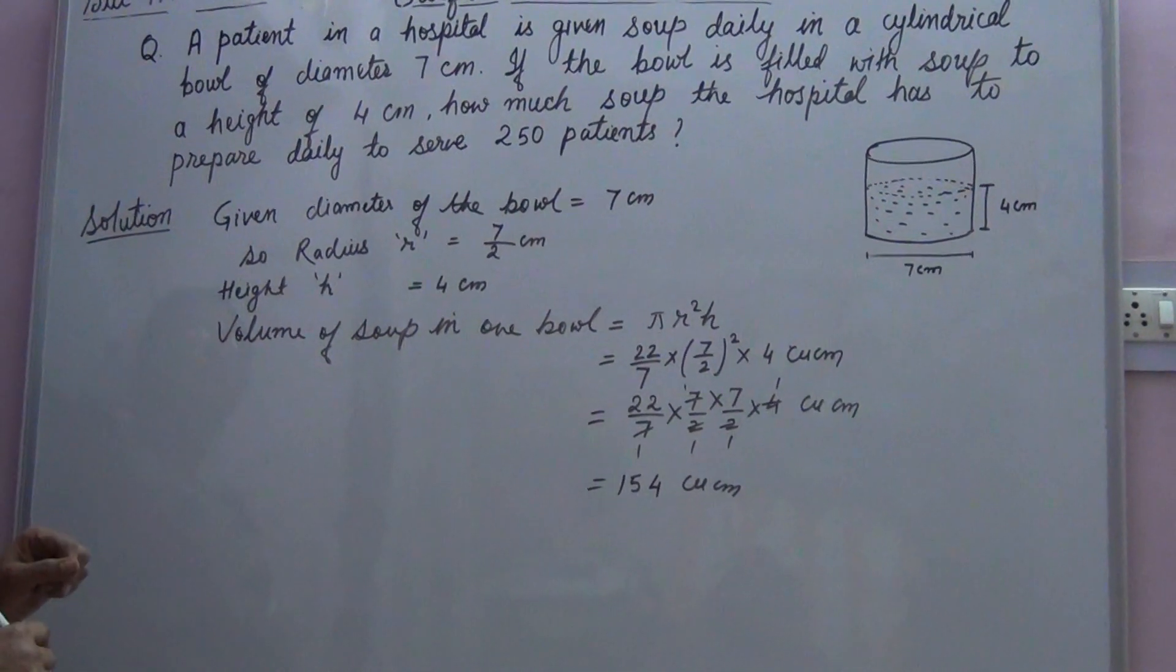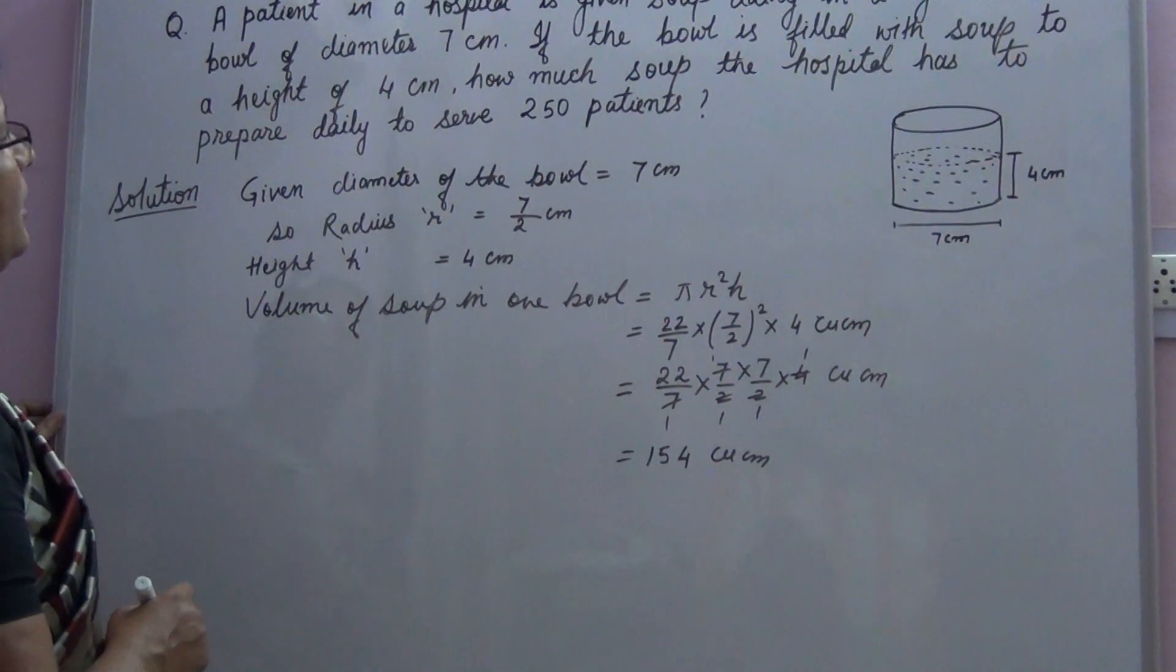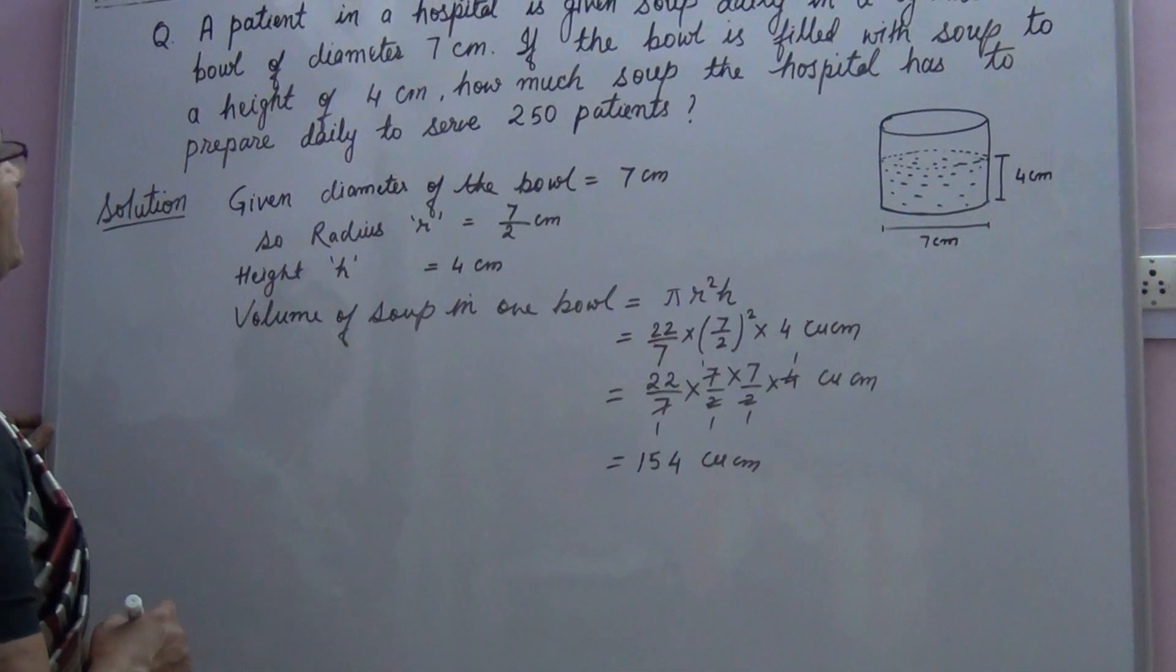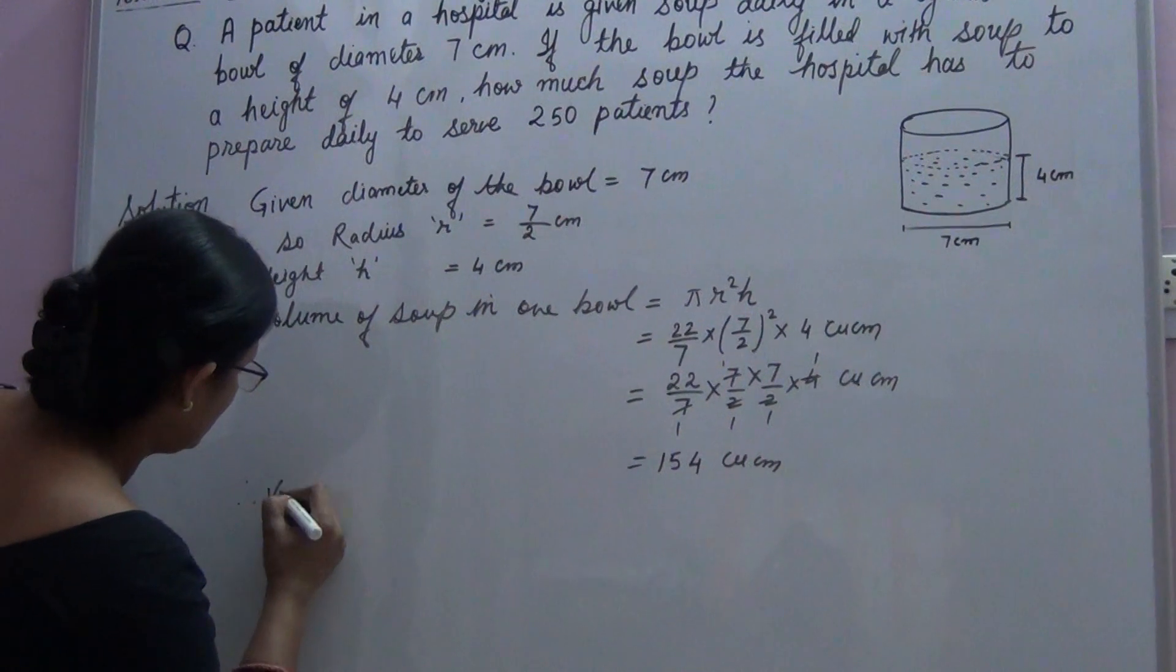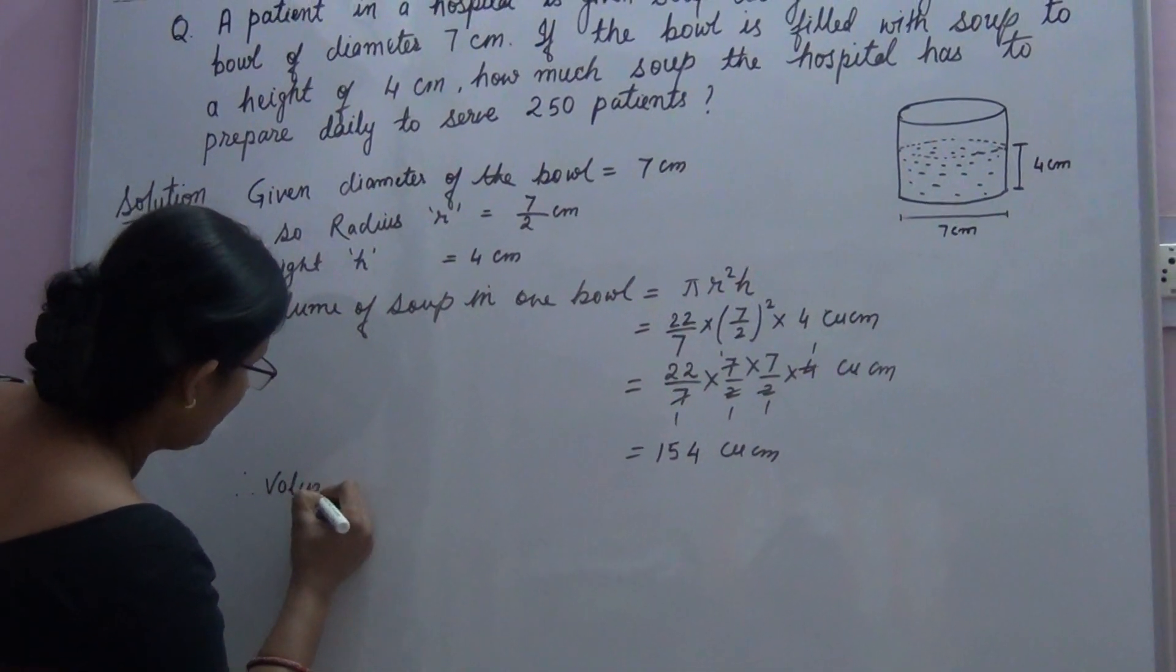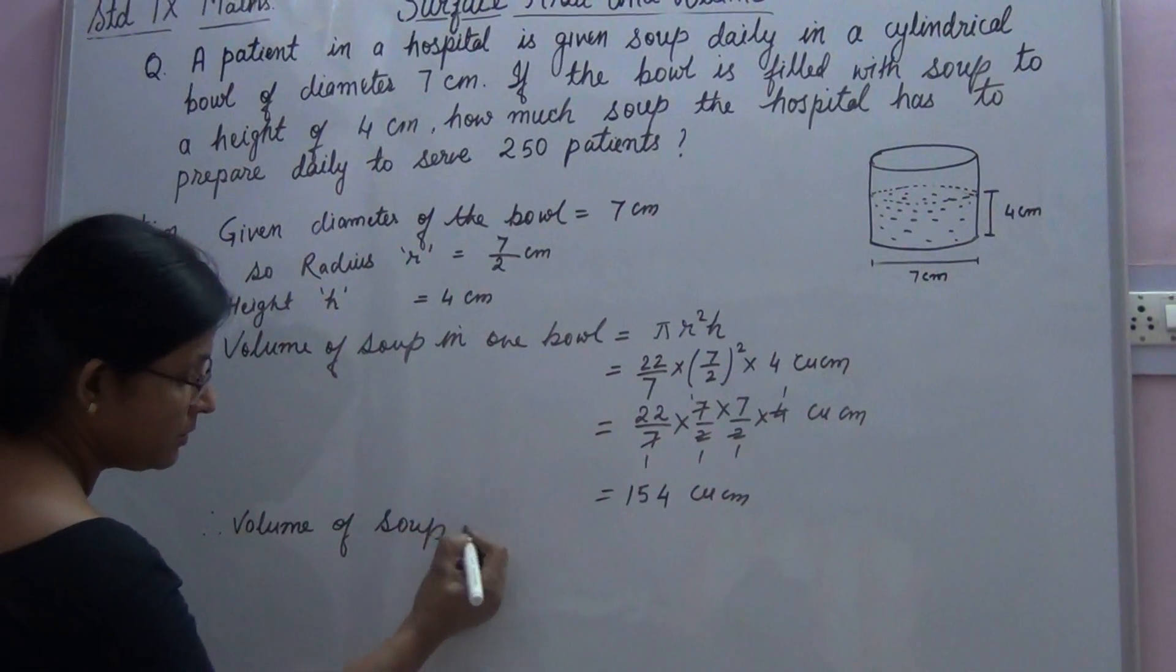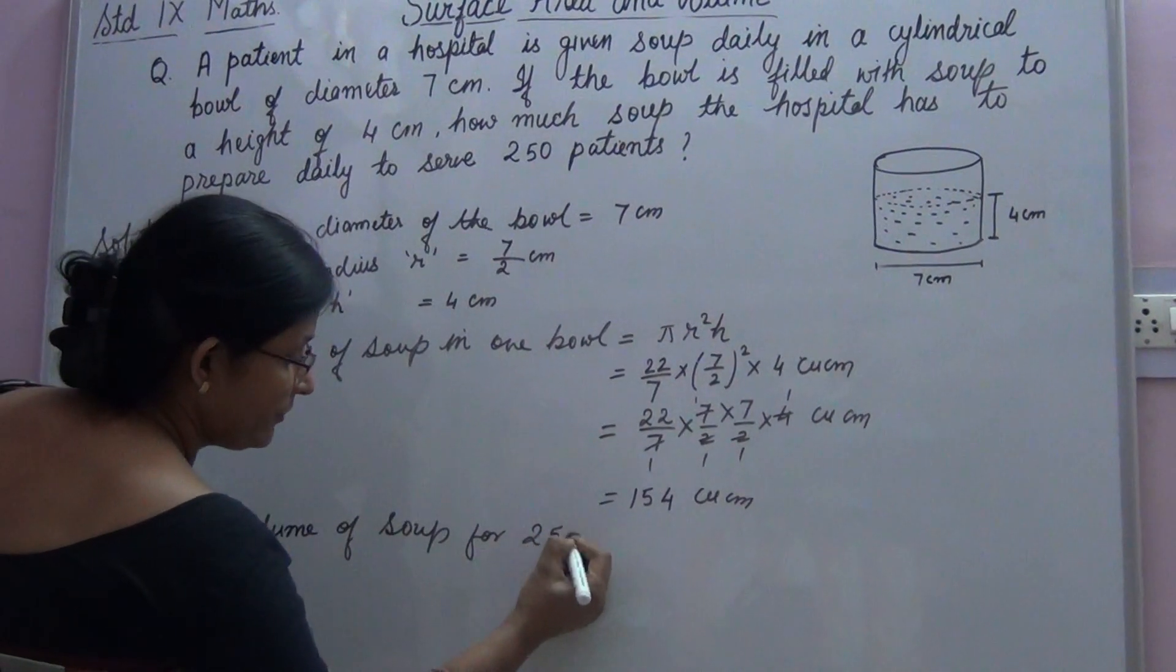But the hospital has to prepare daily to serve 250 patients. So here we have to find volume of soup for 250 patients.